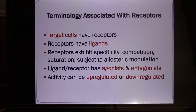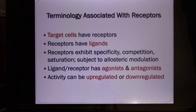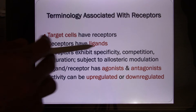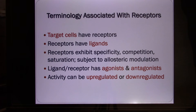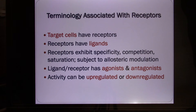Let's look at some terminology. The first is called target cells. Chemical signals released by cells are going to reach the target cells. These target cells have a receptor for that chemical signal. These chemical signals are called ligands. A neurotransmitter is a ligand; a hormone is a ligand. They're going to bind with the receptor. So cells with the receptor are the target cells.